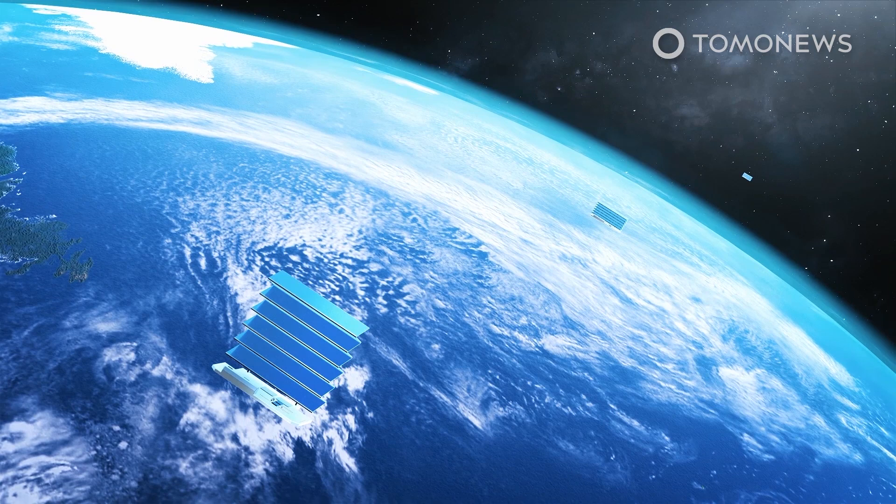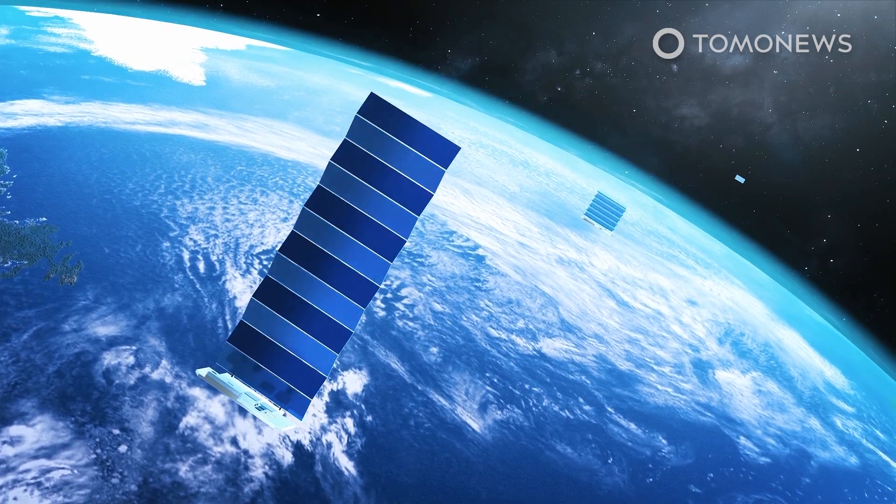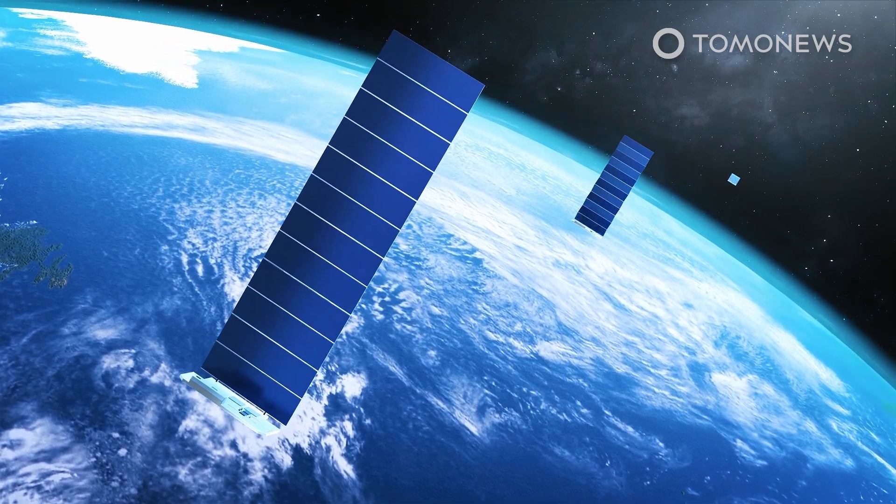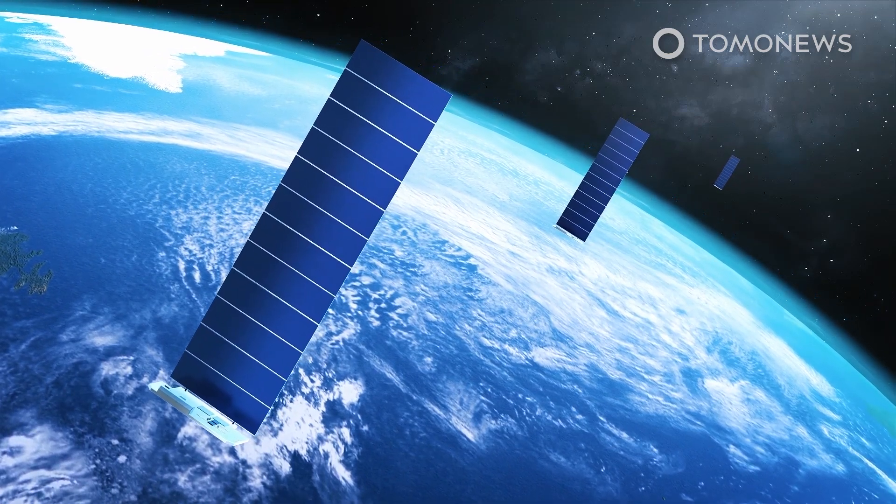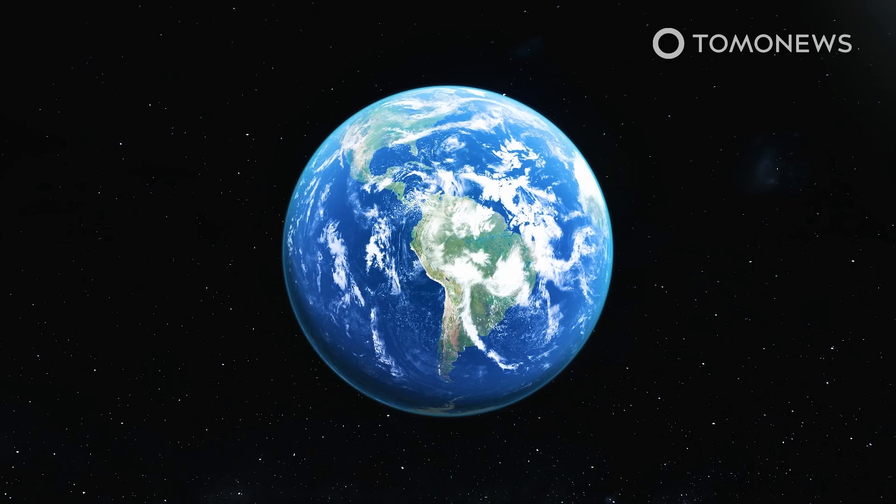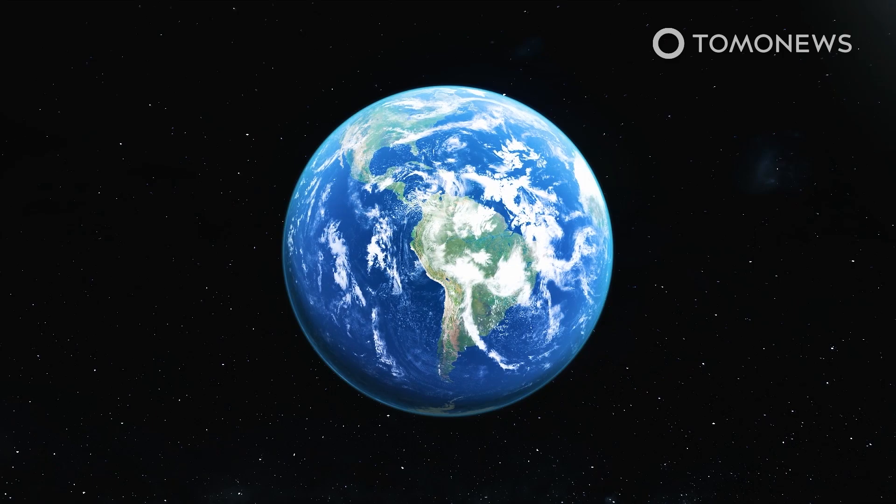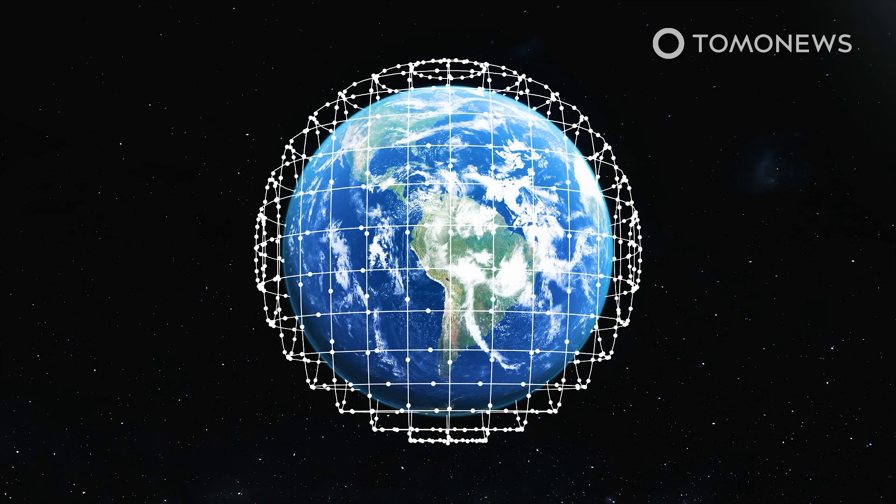SpaceX is currently building a Starlink mega-constellation of small communication satellites around Earth, and has already launched around 800 of these satellites into low Earth orbit. This mega-constellation of satellites will eventually cover every part of Earth. And Elon Musk said it will give all people on Earth access to low-cost broadband internet.